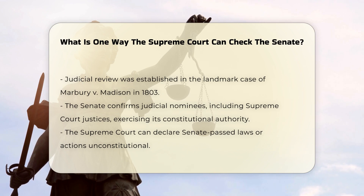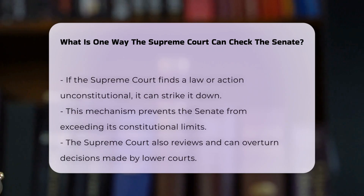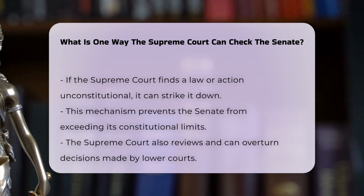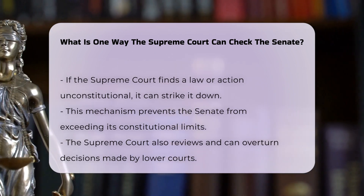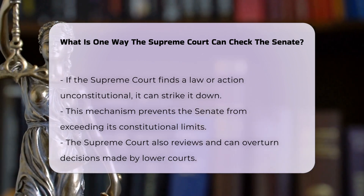When the Senate confirms judicial nominees, including Supreme Court justices, it is exercising its constitutional authority. However, the Supreme Court can check the Senate's actions through its power to declare laws or actions unconstitutional. For instance, if the Senate passes a law or takes an action that the Supreme Court deems unconstitutional, the court can strike down that law or action. This ensures that the Senate does not overstep its constitutional bounds.